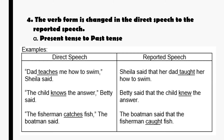Number 4, the verb form is changed in the direct speech to a reported speech — present tense to past tense. Examples: 'Dad teaches me how to swim,' Sheila said. 'The child knows the answer,' Beatty said. 'The fisherman catches fish,' the boatman said. In reported speech: Sheila said that her dad taught her how to swim. Beatty said that the child knew the answer. The boatman said that the fisherman caught fish. The past tense of 'teach' is 'taught,' 'know' is 'knew,' and 'catch' is 'caught.'